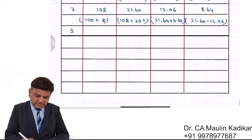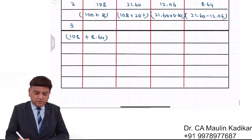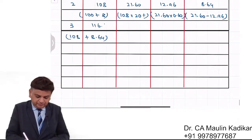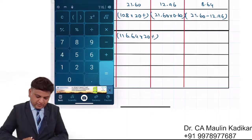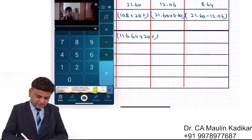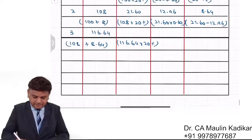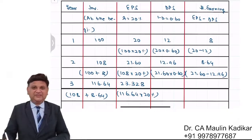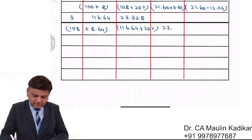Third year beginning: what would be the investment in the business? 108 plus 8.64 comes to 116.64. So 116.64 × 20% — the third year earning comes to 23.328.